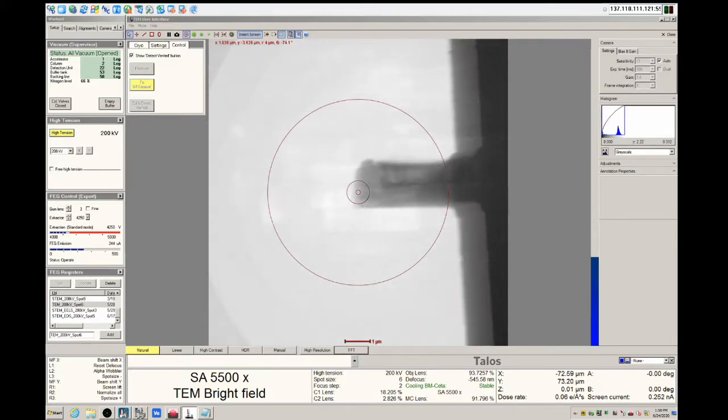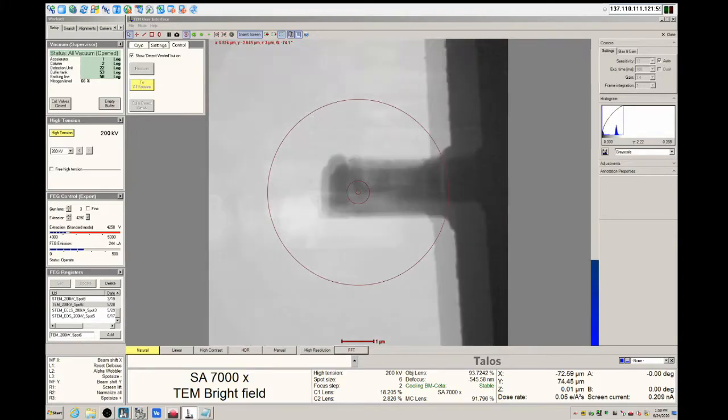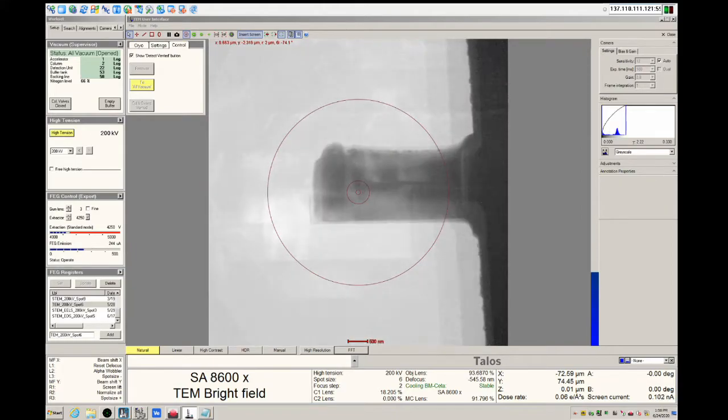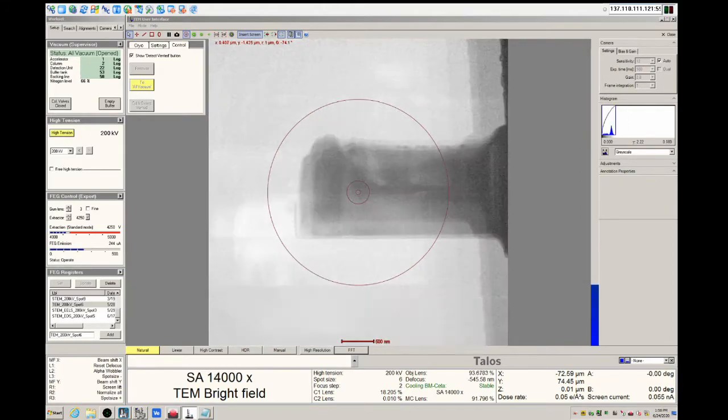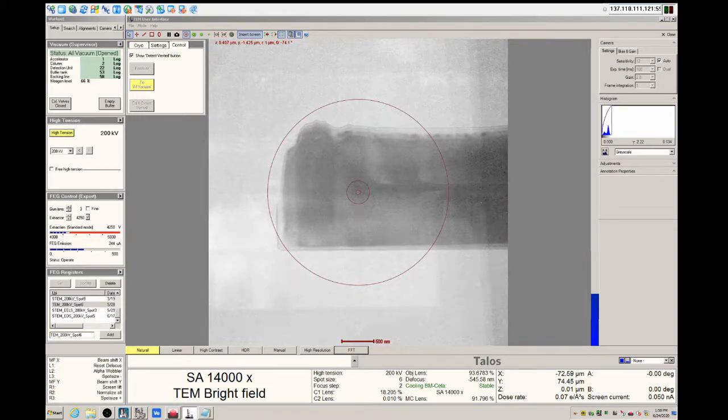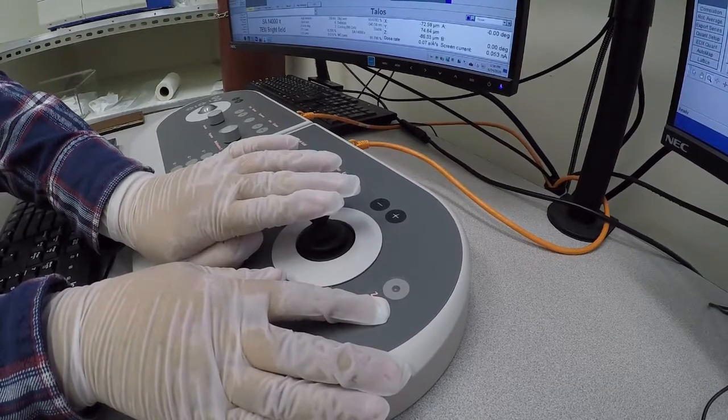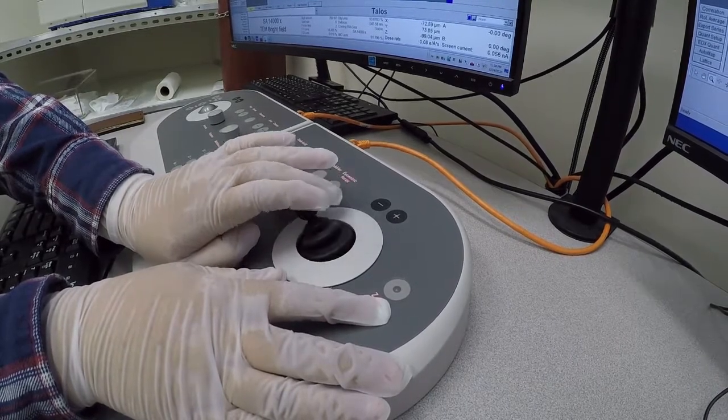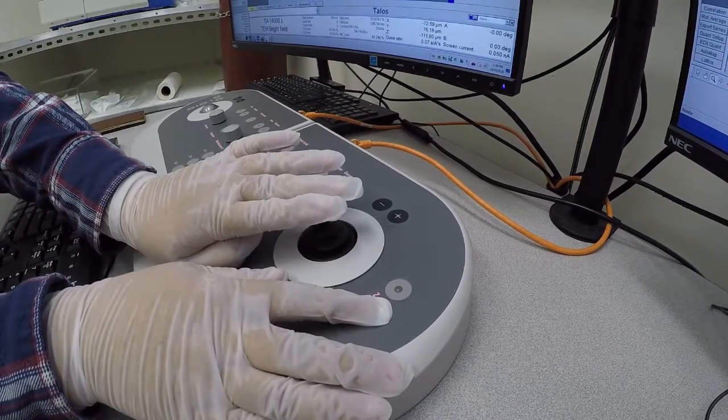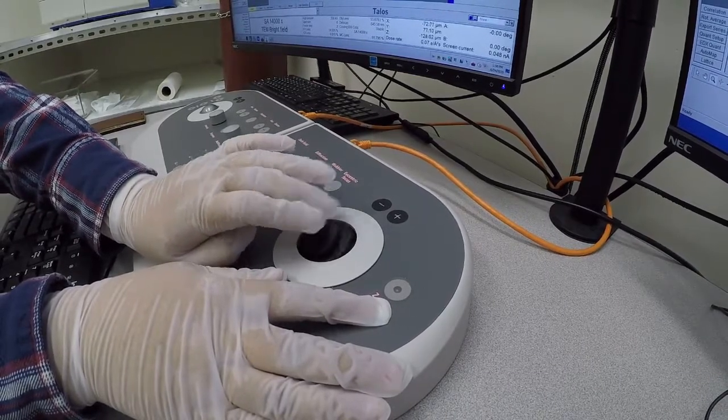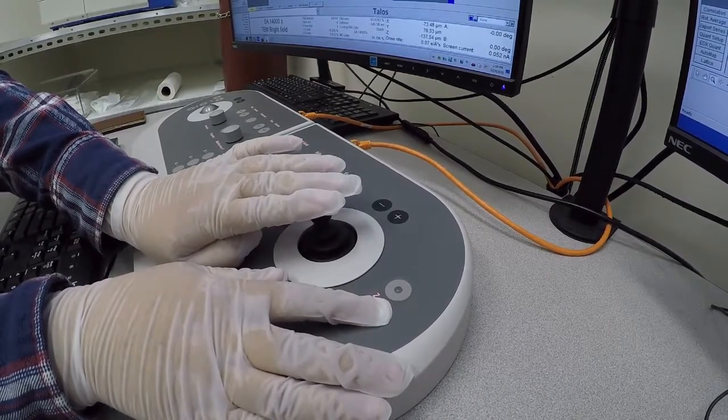The next step is to set the eucentric height. There are a number of ways to set the eucentric height, but one of the quickest and simplest ways is to adjust the stage Z whilst monitoring the contrast of your sample area of interest. Adjust the stage Z using the buttons on the control pad, and use the joystick to keep the sample near the center of the screen.